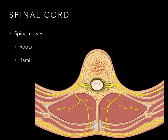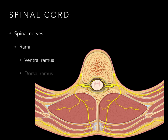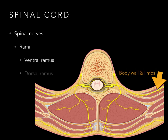Now let's take a look at the spinal nerve trunk. The spinal nerve trunk joins the roots and the rami, and it is a two-way street — both sensory and motor information collectively. Now the ventral ramus is going to the body wall and limbs, and coming from the body wall and limbs, both taking motor and sensory information.